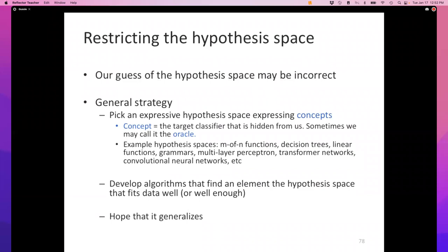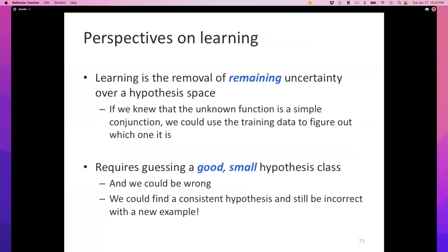Then we can create algorithms that explore this hypothesis space to find the one that best fits the data or for today's focus fits the data perfectly. Once we do that, then there's a hope or we hope there's a theorem or something that tells us that there's generalization that's possible. What does it mean to find a hypothesis space or pick a hypothesis space? You can think of learning as the process of removing uncertainty over a hypothesis space. What does that mean? There are all possible functions that can exist that map the instance space to the label space. Before I make any assumptions and before I see any data, I have no idea which of those functions is the right answer, is the right one, is the oracle.